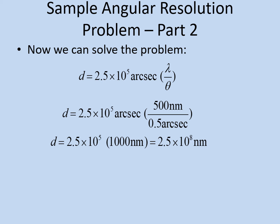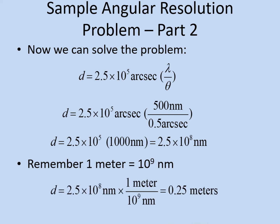It's hard to tell just how big that is since nanometers are such a small unit, so we need to convert into meters. There are 10 to the 9th nanometers in one meter, so we write the conversion as a fraction with 1 meter on top and 10 to the 9th nanometers on the bottom, and multiply by the diameter we just calculated. The nanometers cancel out, leaving meters. When we finish the calculation, we get 0.25 meters, which is around 10 inches across — so a large backyard telescope is big enough to give you this much resolution.